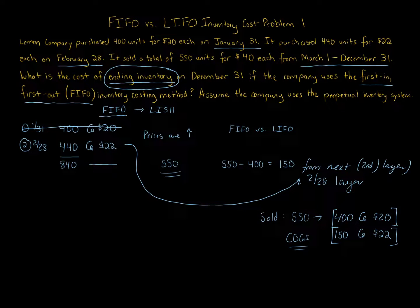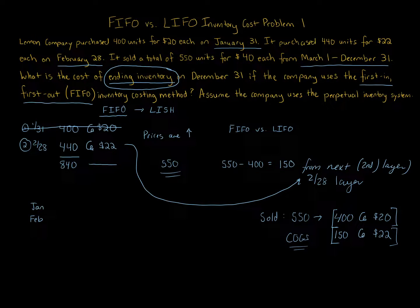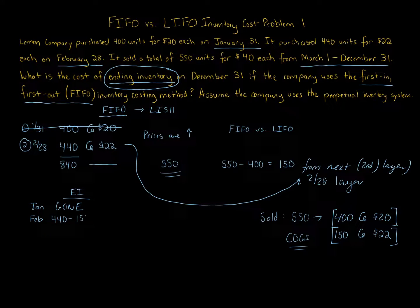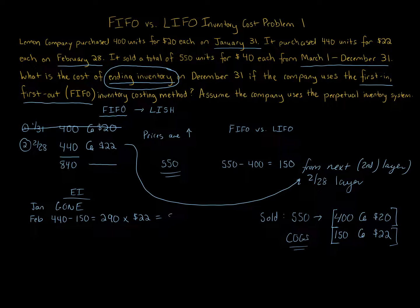But we're asked for ending inventory, not cost of goods sold. The January 31st layer is completely gone. From the February layer, we started with 440 and sold 150, leaving 290 units in ending inventory at $22 per unit. So ending inventory equals 290 times $22, which is $6,380.